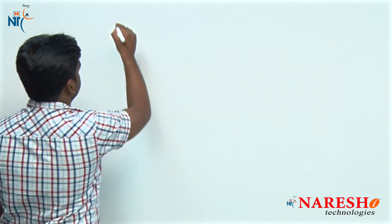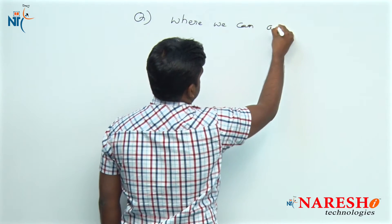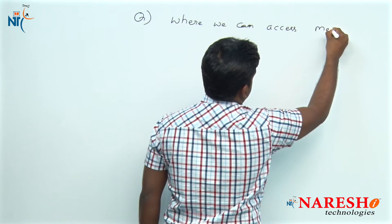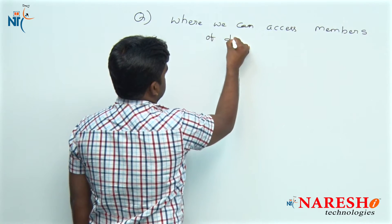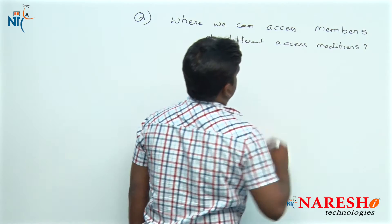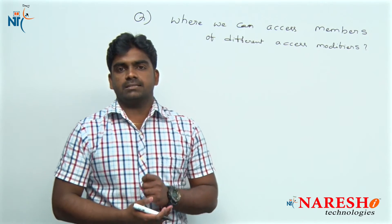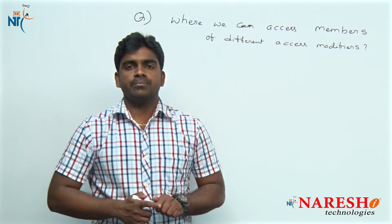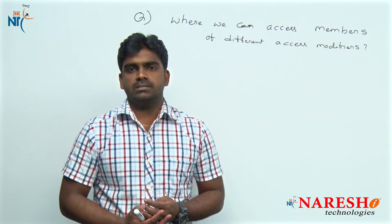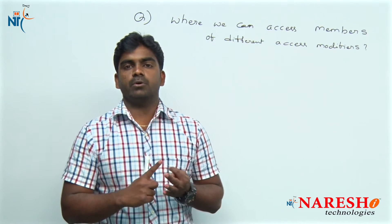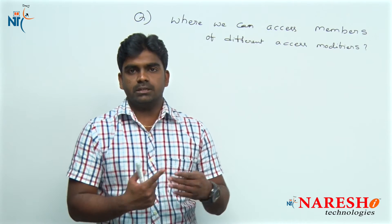Hi everyone, welcome to Nourish Technologies, this is Srinivas. In this session, we are going to discuss one interview question in Core Java — where we can access members of different access modifiers. We have four different types of access modifiers in Java: private, public, protected, and package level, which is the default.